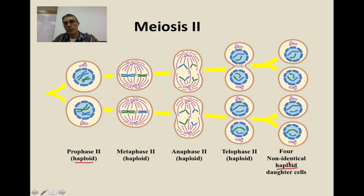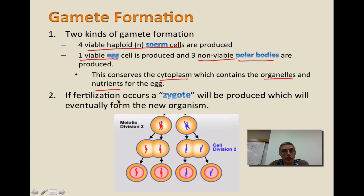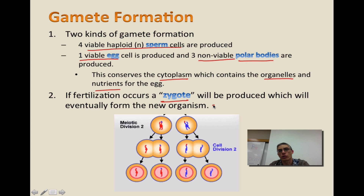These haploid daughter cells are not identical because crossing over occurred during meiosis I. Once fertilization does occur — once the sperm and the egg actually come together — we're going to give that cell a new name: it's going to be called a zygote. A zygote is eventually going to develop and form the new organism.